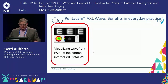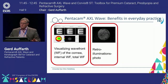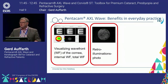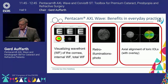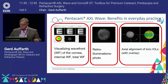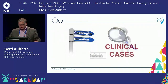The retroillumination photo is not only interesting for cataracts — it gives us an advantage. For example, if there are some insurance issues, you can identify the cataract and document it. Also, if you have the retroillumination photo, you can easily look at the optics of a lens — for example, the toric lens — and you can overlay that with the tomography and see whether it is on axis, whether it is not on axis, and how much it is decentered. I will show you an example later on this.